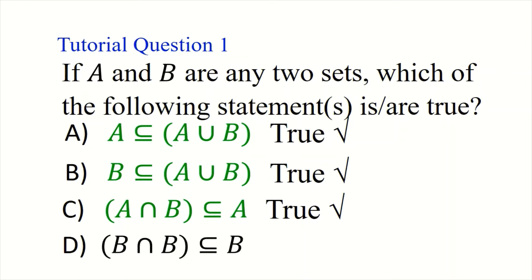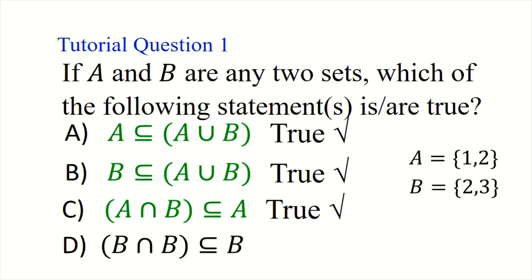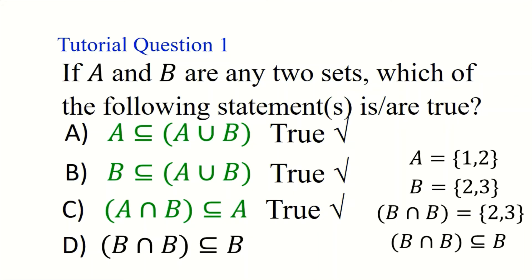The last option we consider is B intersection B. Every element in B that is also in B is still referring to set B itself, so B intersection B will always be a subset of B. This option is also true.